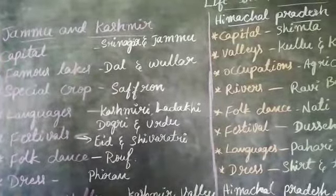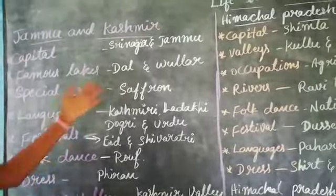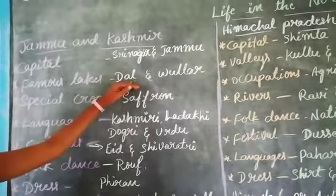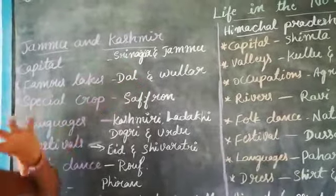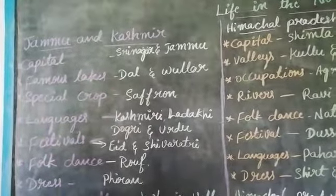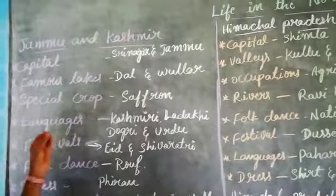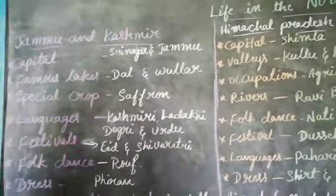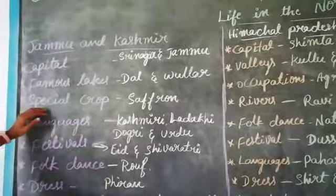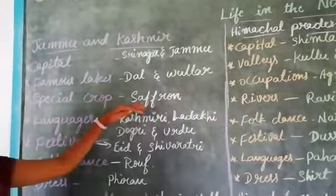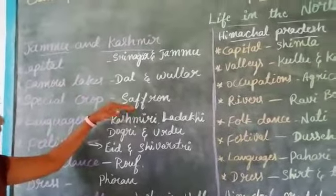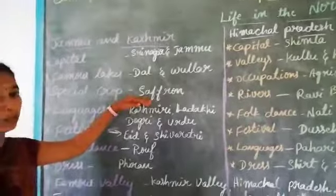Dal and Wular lakes are famous lakes in Jammu and Kashmir. Houseboats are special in these lakes. Special crops include Saffron — Saffron is a special crop of Jammu and Kashmir.